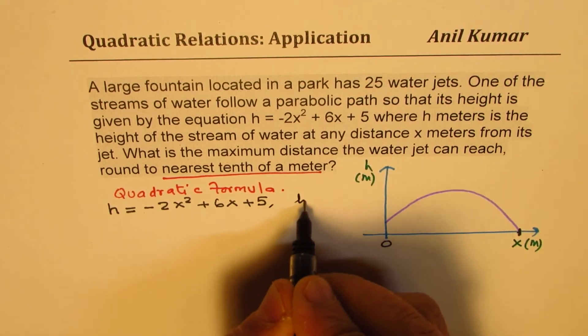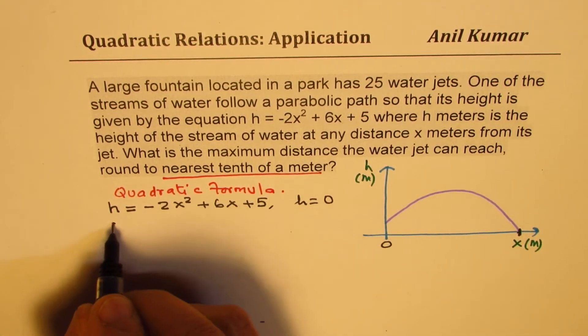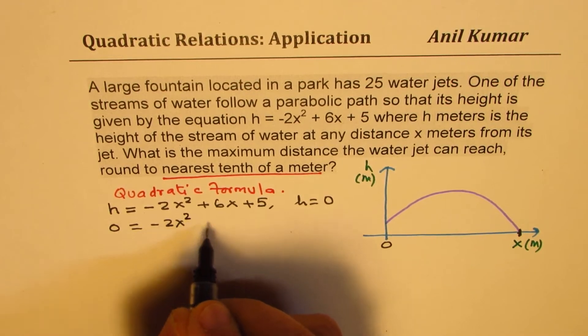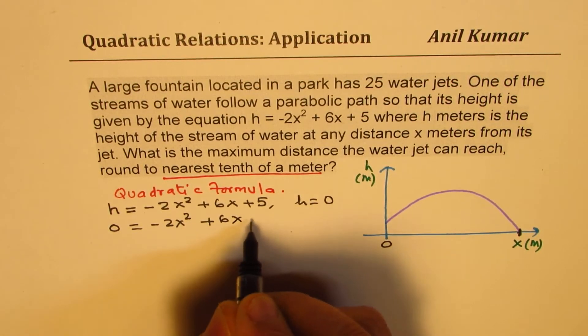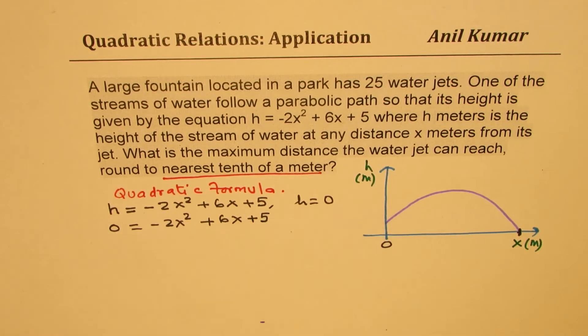Now, if h equals to 0, then we can write this as 0 equals to minus 2x squared plus 6x plus 5.